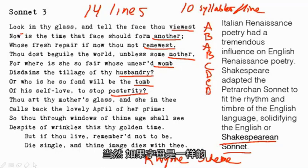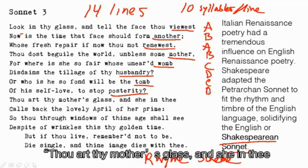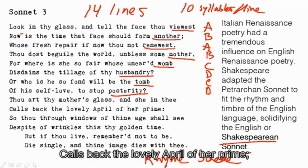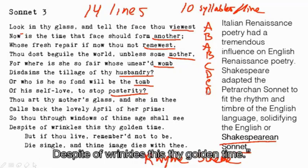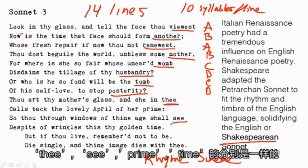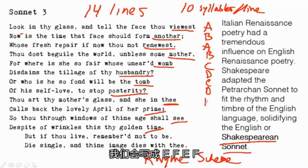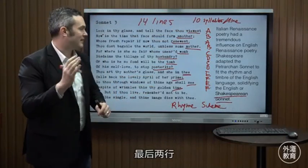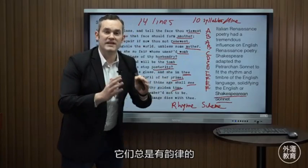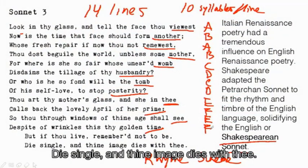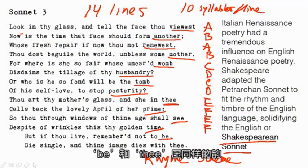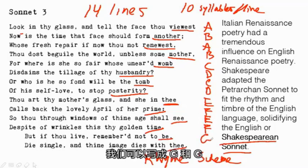When the letters are the same, it means those lines rhyme at the end. Continuing: 'Thou art thy mother's glass, and she in thee / Calls back the lovely April of her prime; / So thou through windows of thine age shalt see, / Despite of wrinkles, this thy golden time.' Prime and time rhyme — we write E-F-E-F. Then the final two lines: 'But if thou live remembered not to be, / Die single, and thine image dies with thee.' We write G-G.